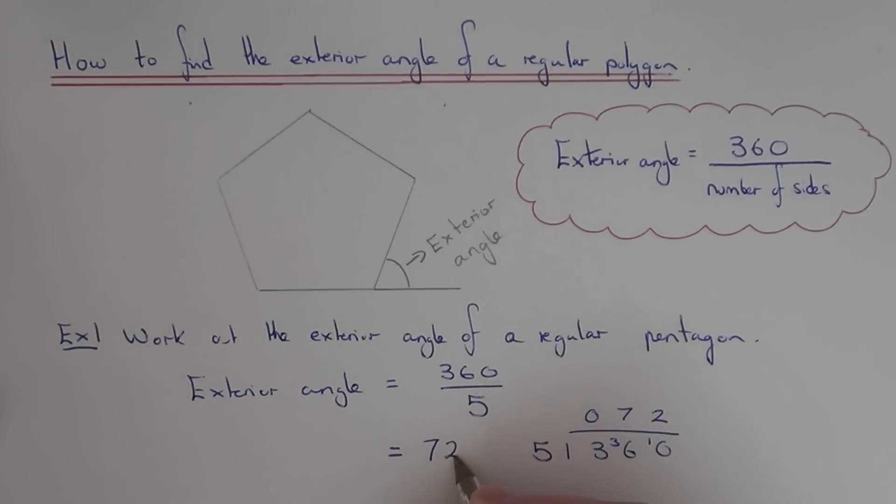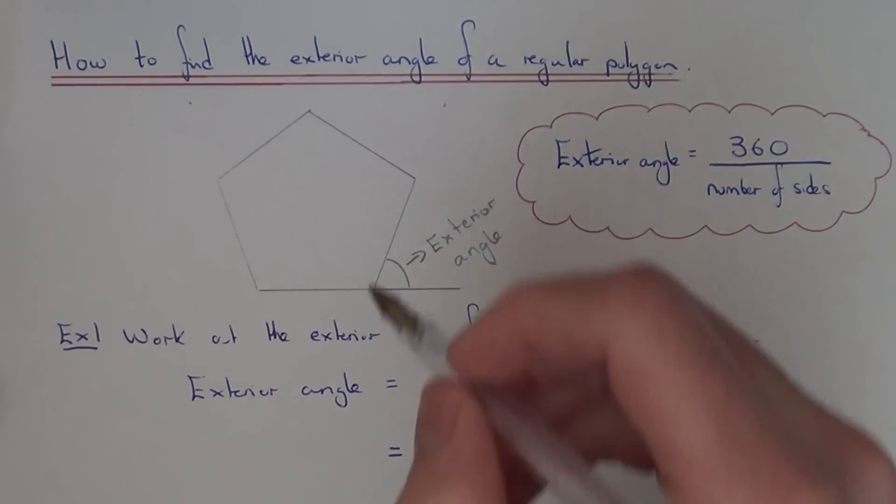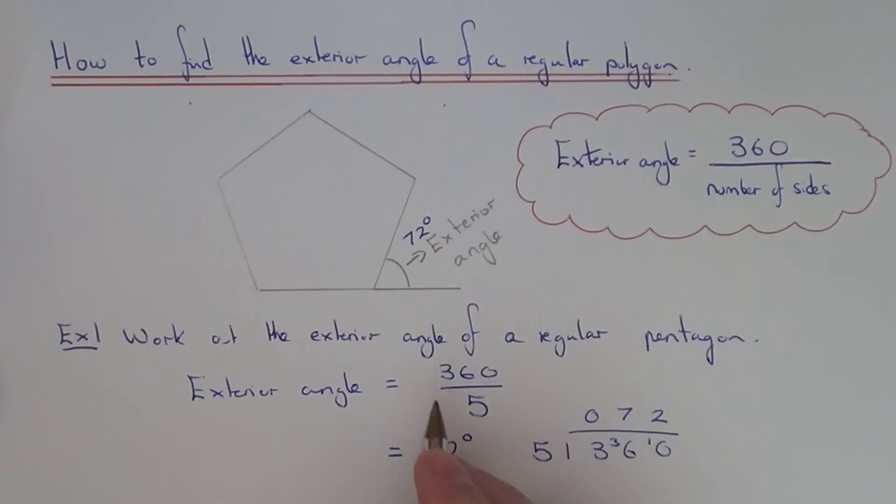So the exterior angle of this regular polygon, or this regular pentagon shown above, is 72 degrees. And you can tell that this is correct because you can see it's an acute angle and it looks like 72 degrees.